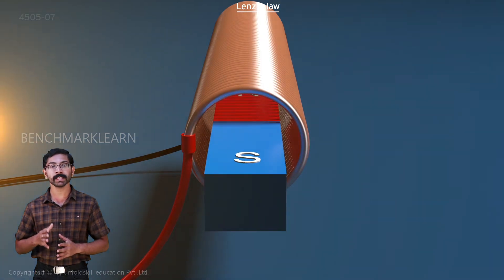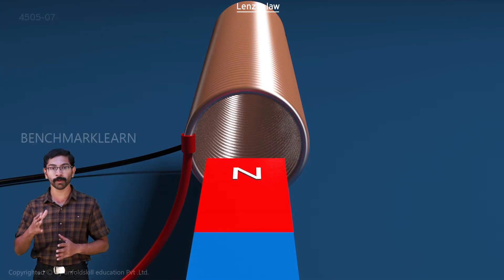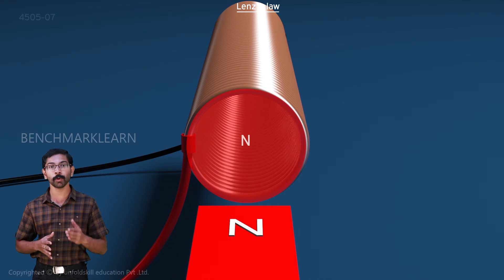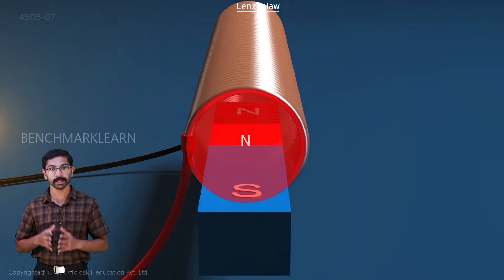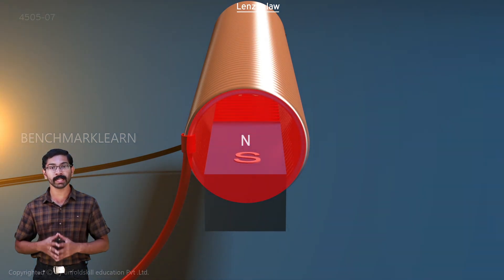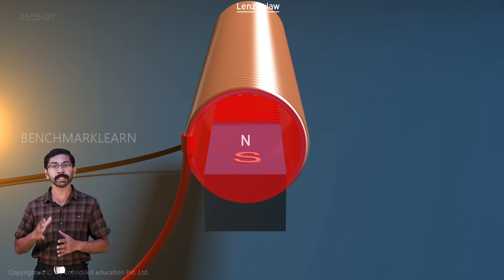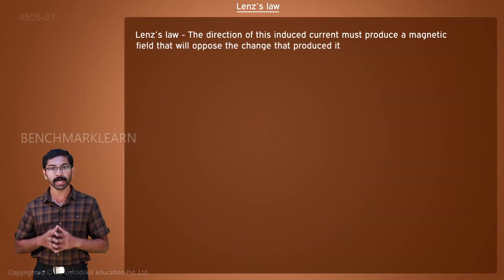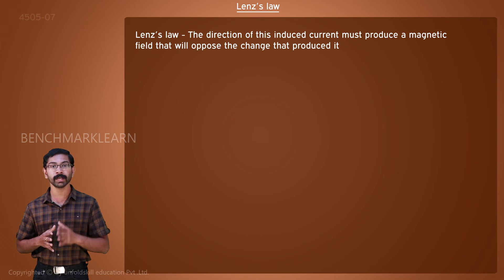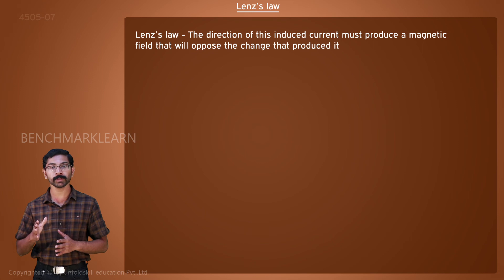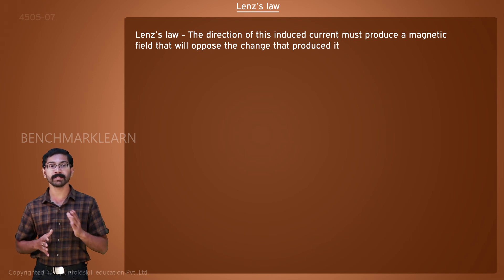This is much like moving the north pole of a magnet towards the north pole of another magnet. Thus, the coil behaves like a magnet such that it will oppose the motion. For a coil of wire to become a magnet, current must flow through it. The direction of this induced current must produce a magnetic field that will oppose the change that produced it. This is Lenz's law.